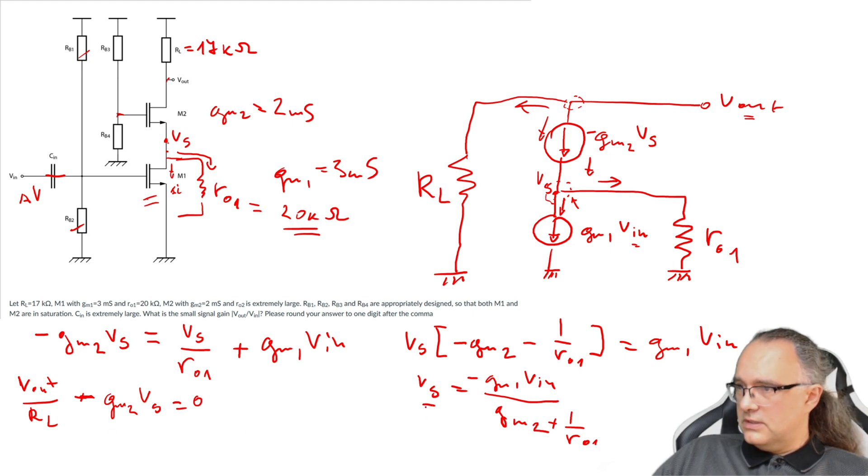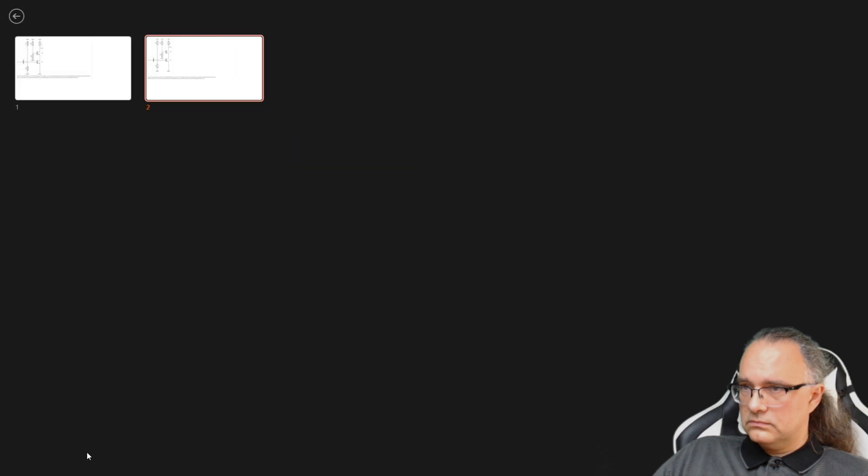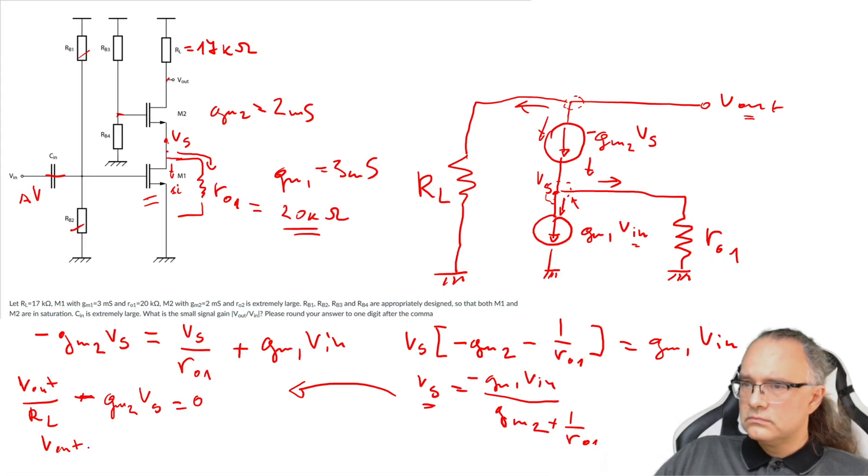So now I take this and I put it inside so I got Vout divided by R load and Gm2 divided by Rout1 divided by Rout1 minus this minus and this minus is plus. Then I have Gm2·Gm1·Vin divided by Gm2 plus 1 over Rout1 and this is equal to 0.